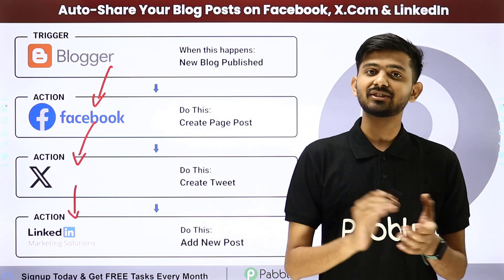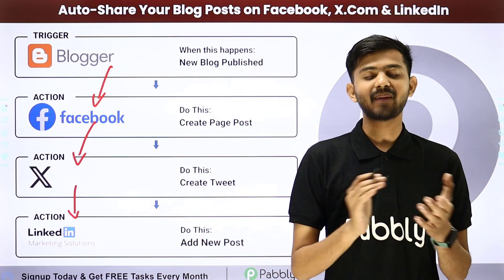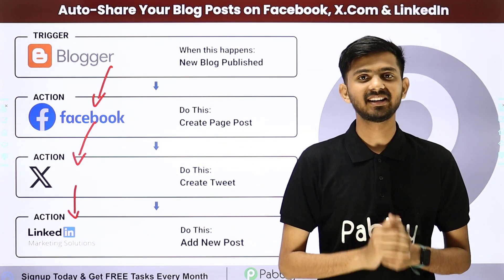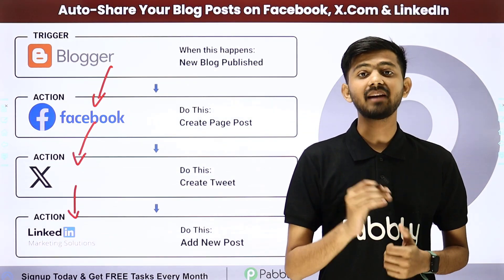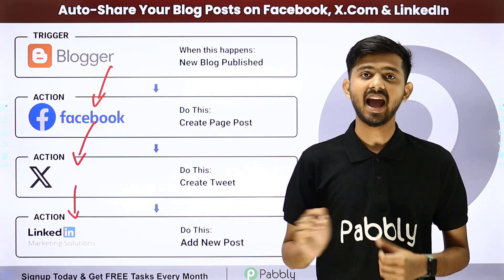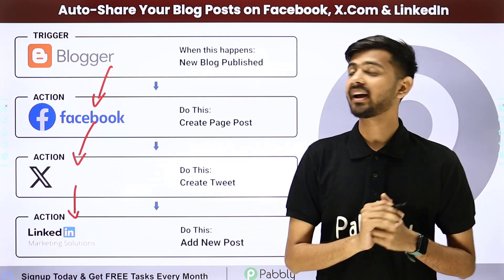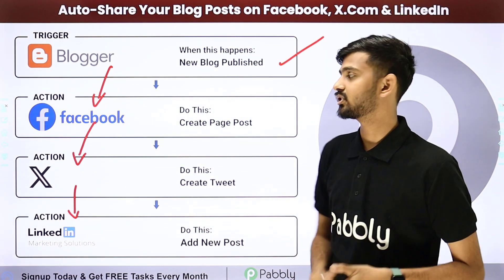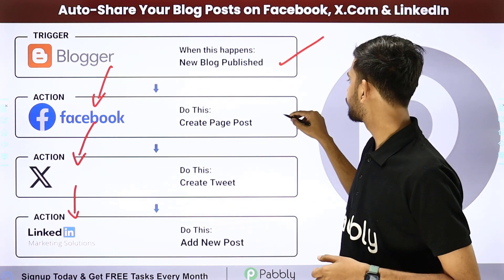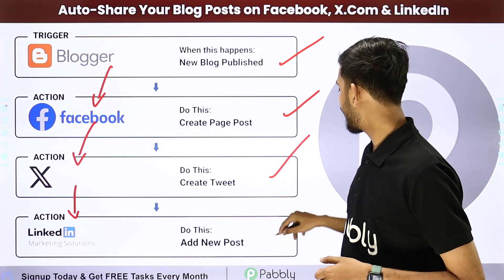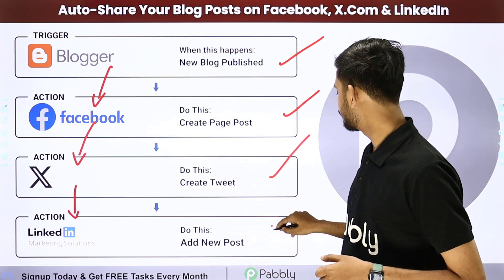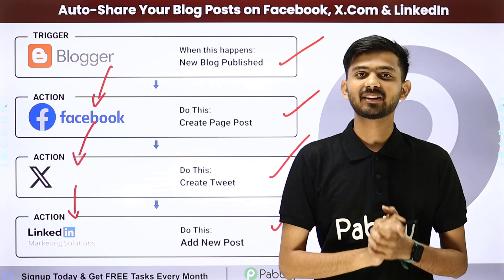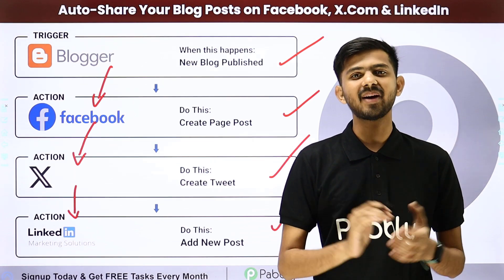For creating this connection, I'm going to use Pabbly Connect, which is an amazing software for automation and integration. In Pabbly Connect, I have to use Trigger and Action. In the Trigger application, I'm going to use Google Blogger. In the Action application, first I'm going to use Facebook, then X.com, and last LinkedIn. Let me take you to my computer screen.